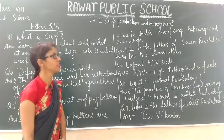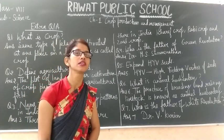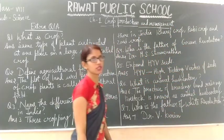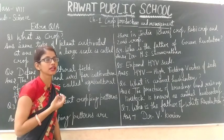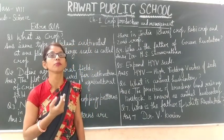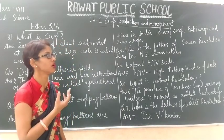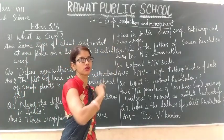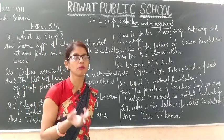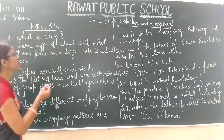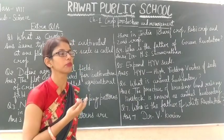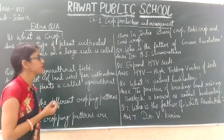Good morning students, I hope you all are well. We have completed Chapter 1 on crop production and management, where we learned about different agricultural practices, basic practices used for crop production, and how to manage those processes. We also learned about different agricultural equipment, both traditional and modern. Today we will do the extra question answers from within the chapter, which are very important for you.